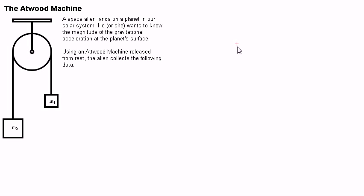A space alien lands on a planet in our solar system. He or she wants to know the magnitude of the gravitational acceleration at the planet's surface. Using an Atwood machine released from rest, the alien collects the following data.